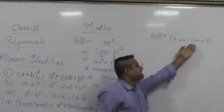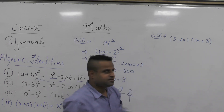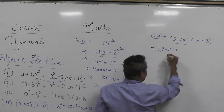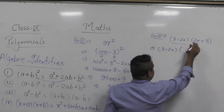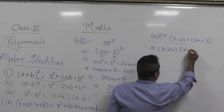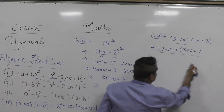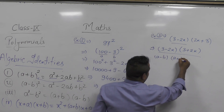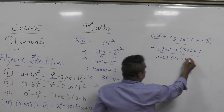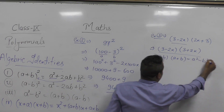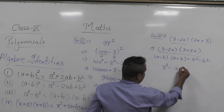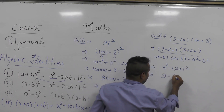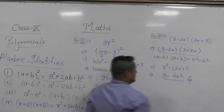So we can assume 2x plus 3 and rearrange. I am keeping 3 minus 2x as it is, and I am changing the second term to 3 plus 2x. Now this looks like A minus B into A plus B where A is 3 and B is 2x. This will result in A square minus B square, that is 3 square minus 2x square, which gives us 9 minus 4x square. And that is our answer.